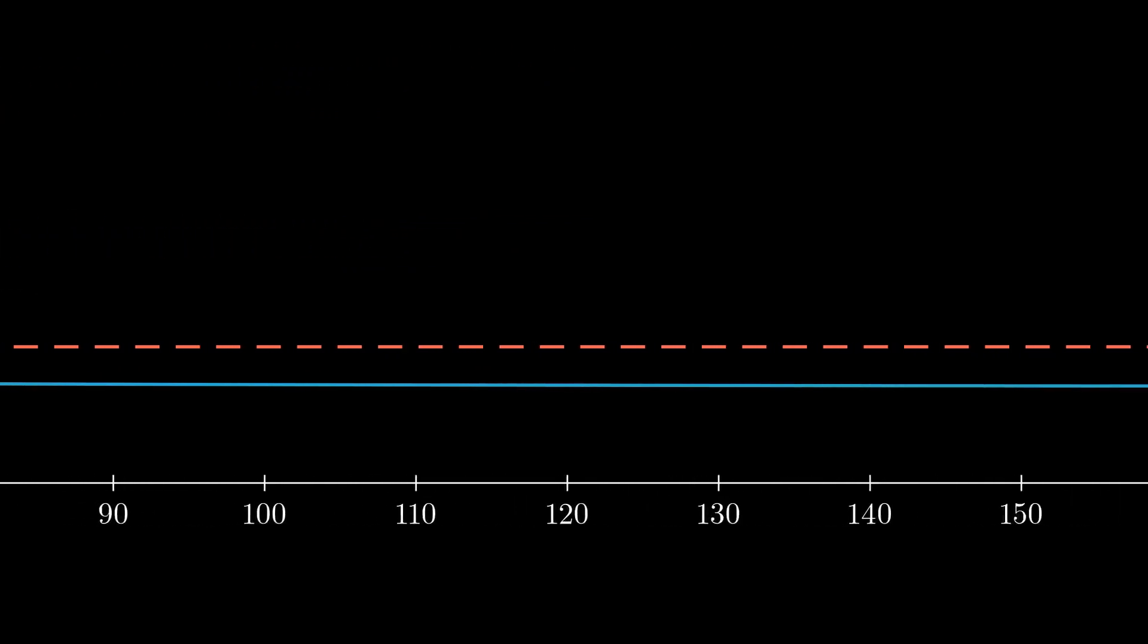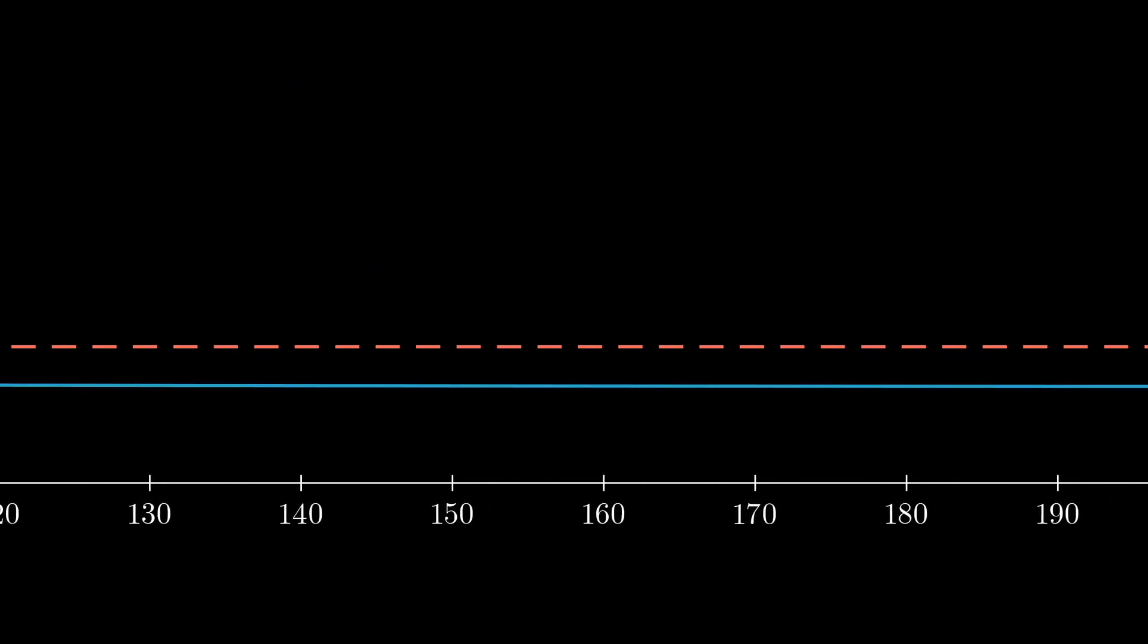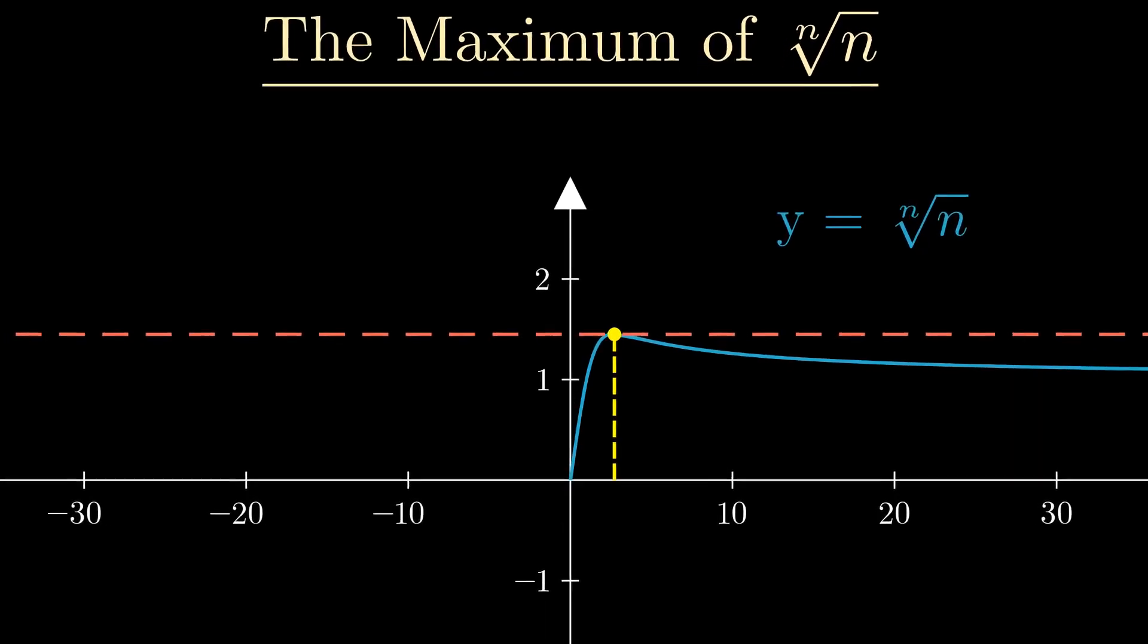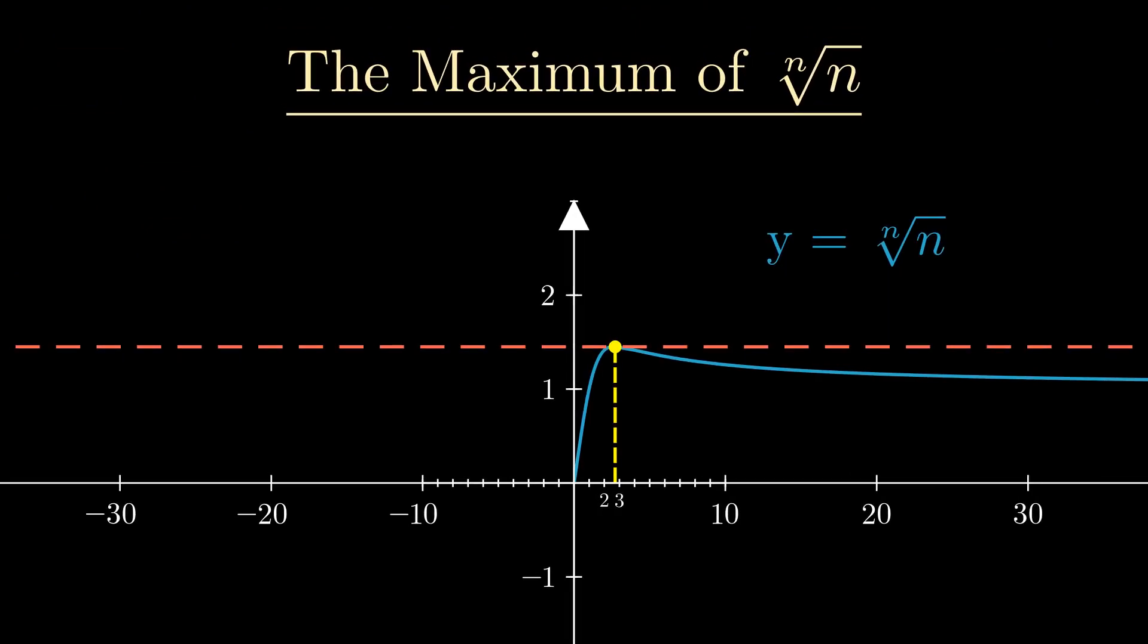Although this isn't a conclusive proof, even if we move along the x-axis we can see that the output for the nth root of n continually decreases. So for now we're gonna assume that this is the maximum, although we'll prove this later. We can try to figure out the x value at this point and we can see it lies somewhere between 0 and 10. And if we zoom in, we can actually see this lies somewhere between 2 and 3.